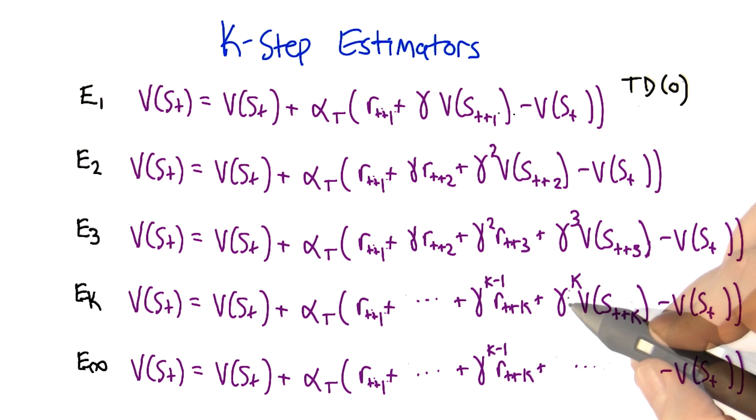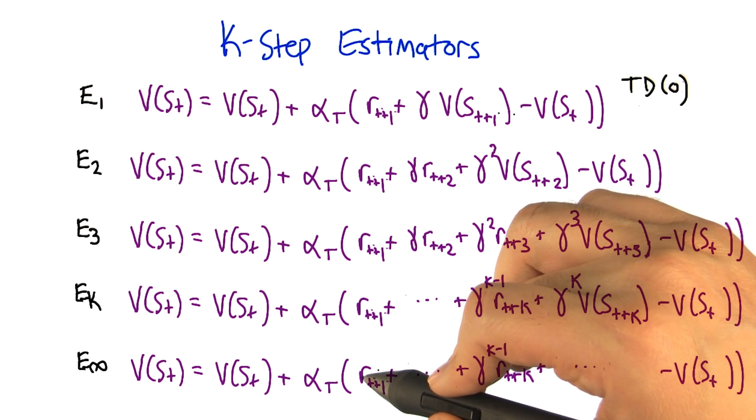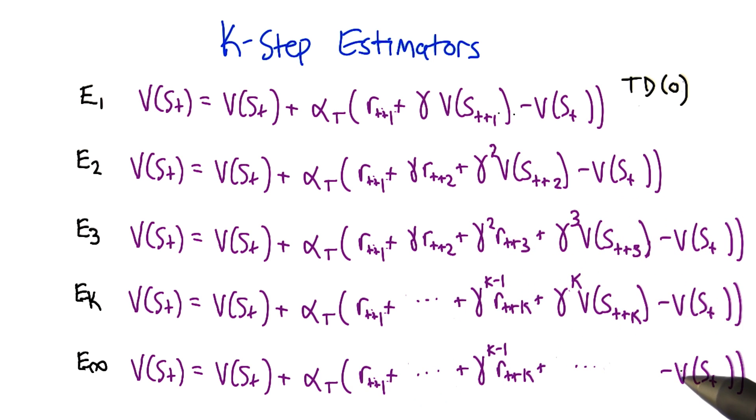But then it's okay because we discount it by gamma to the infinity, which is zero. So this piece of the term actually drops out and we just end up with this infinite sum of rewards. Now this last estimator should look familiar to you too, Charles.